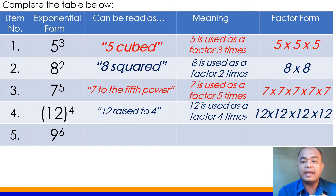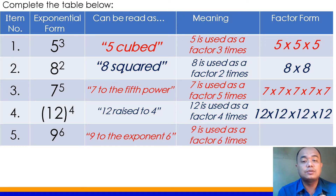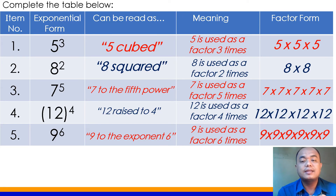Number 5: 9 to the exponent 6, or 9 raised to 6, or 9 to the 6th power. It means 9 is used as factor 6 times, or 9 is being multiplied 6 times. The factor form of 9 to the exponent 6 is 9 times 9 times 9 times 9 times 9 times 9.